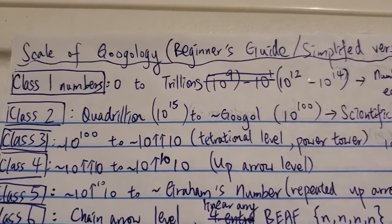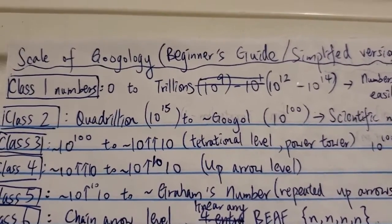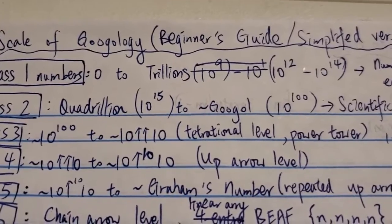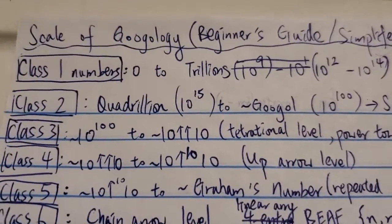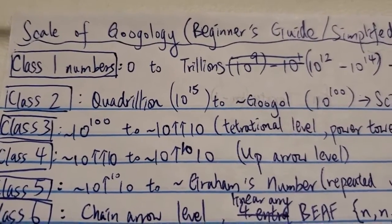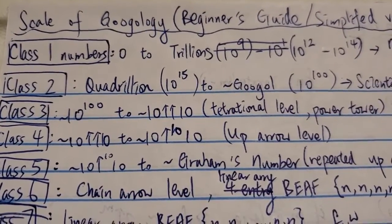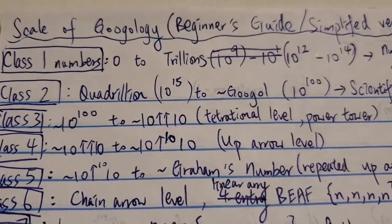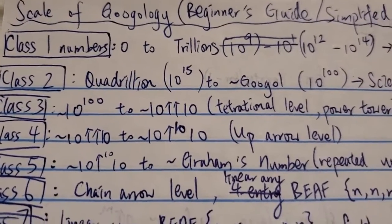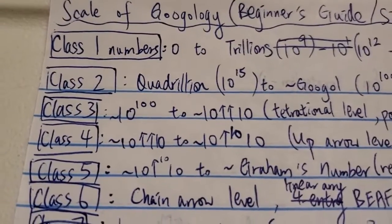So it requires more than two up arrows. This is the up arrow level. It includes, let's say, 3, 3 arrows 3 or G1, from Graham's number. That will be class 4.